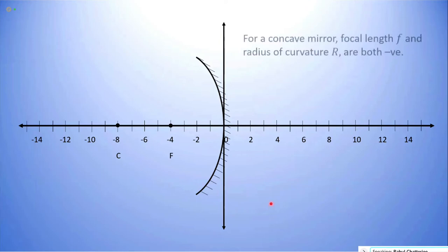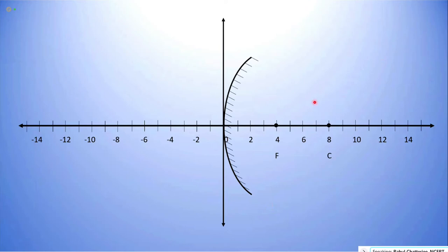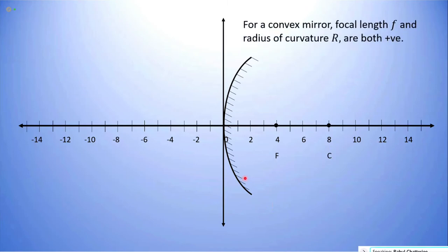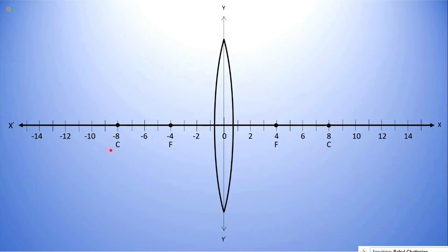Therefore, when we talk about u or v, we are technically talking about coordinates, not just distances. Anything on the left has a negative sign, anything on the right is positive, anything above the principal axis along the y-axis is positive, and those below are negative. To summarize: for a concave mirror, focal length f and radius of curvature R are both negative. For a convex mirror, both the focus and radius of curvature are positive.